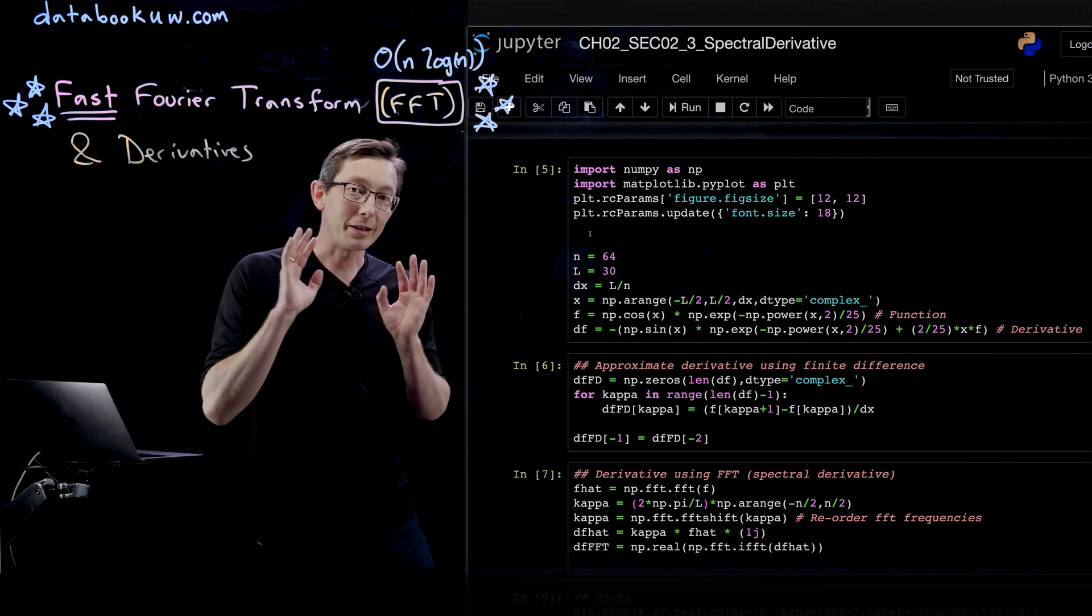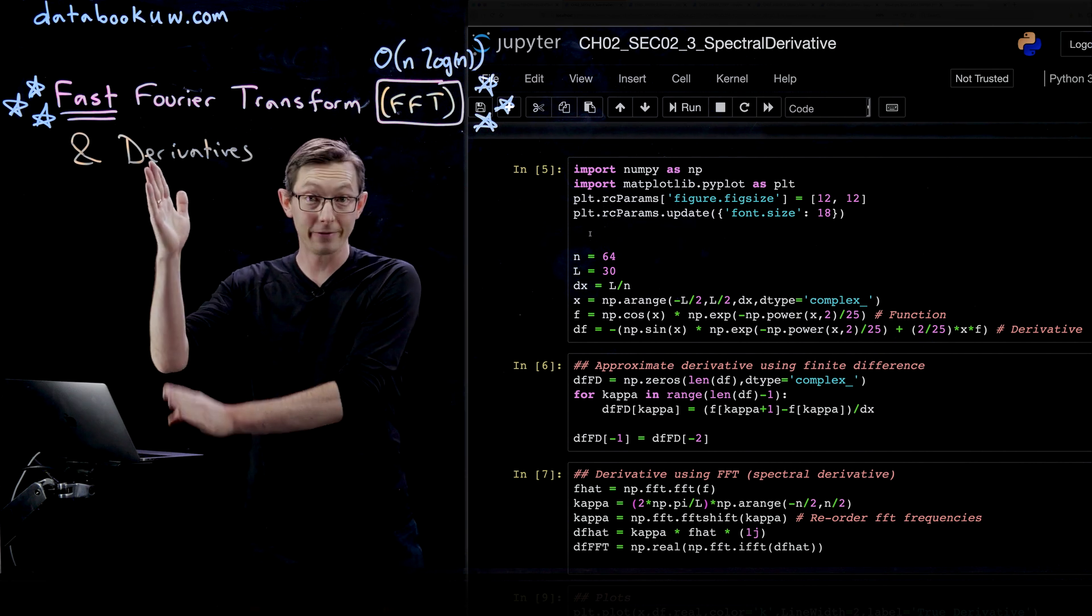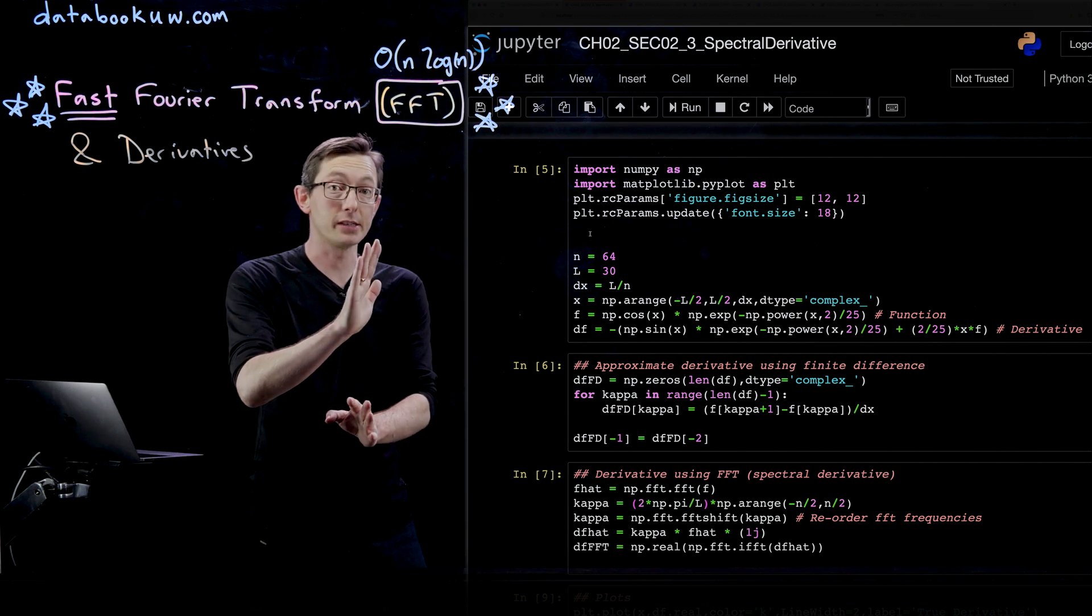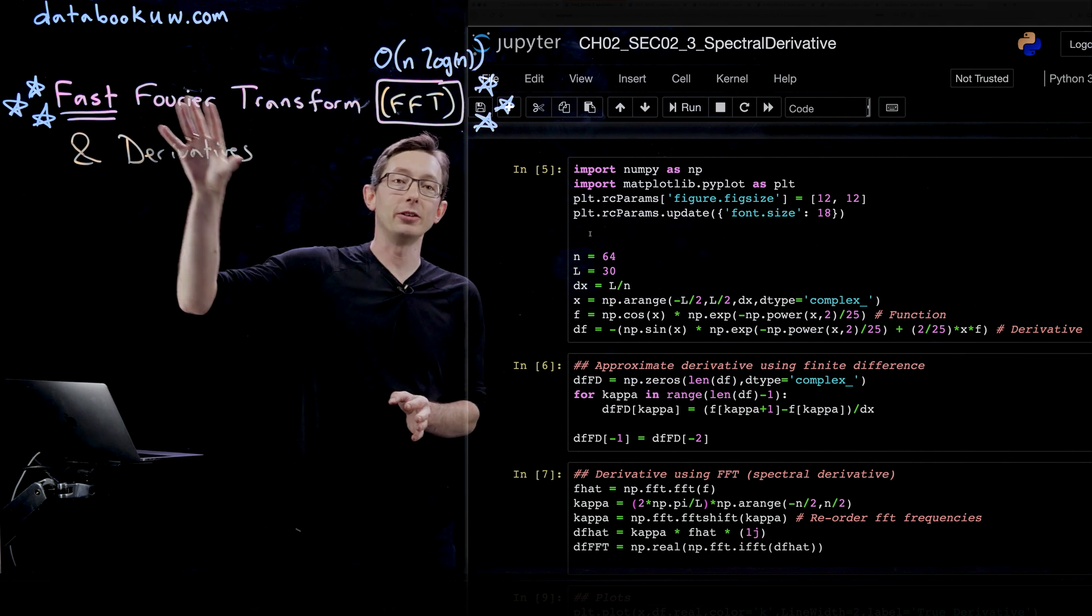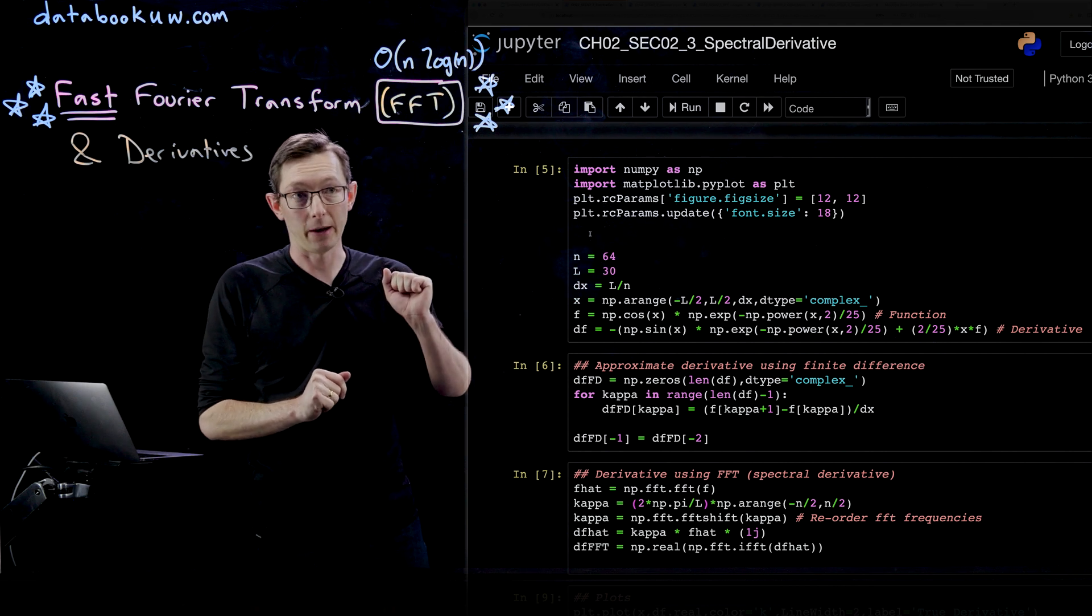Welcome back. We've been talking about the fast Fourier transform and how you can transform data vectors into their Fourier coefficients. Now I'm going to tell you how you can use the FFT to approximate derivatives in this Python example.